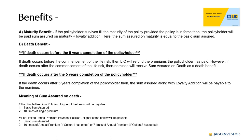Let us see what sum assured on death means. For single premium policies, the higher of the following is given: basic sum assured or 10 times the single premium. For limited premium payment policies, the higher of the following is given: basic sum assured or 10 times the annual premium under option 1, or 7 times the annual premium under option 2.